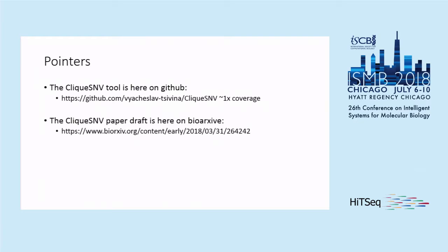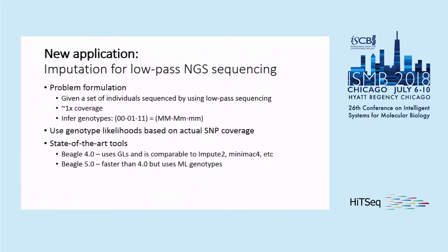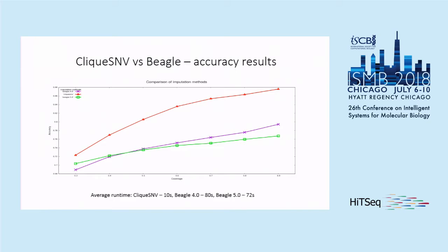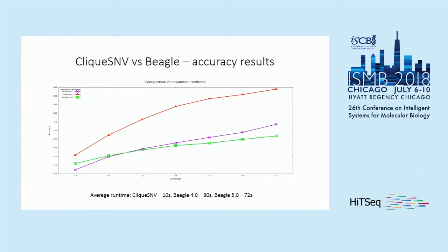The last thing I want to mention: we've applied Click SNV to a new application — imputation for low-pass WGS sequencing. We take low-pass data (below 1× coverage), treat each person's known genotype sequence as a read, apply Click SNV internally, and compare with Beagle (fast and slow versions). At 0.6× coverage, we improve prediction accuracy by approximately 10%.